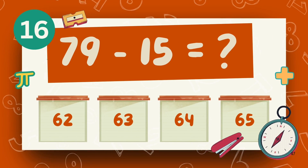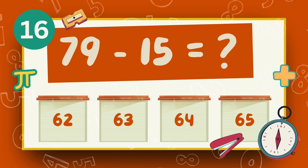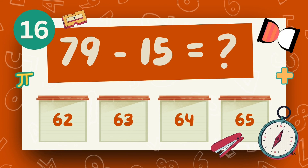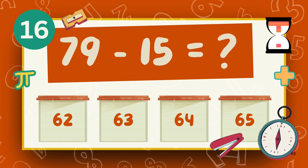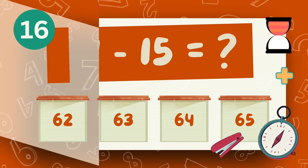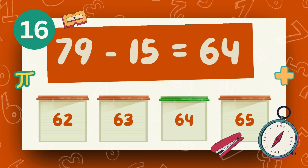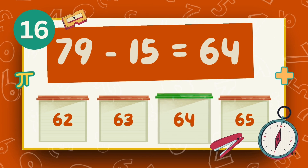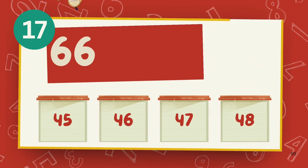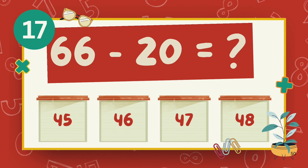What is 79 minus 15? The answer is 64. What is 96 minus 20?